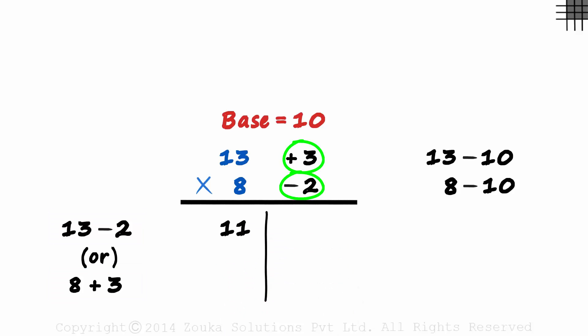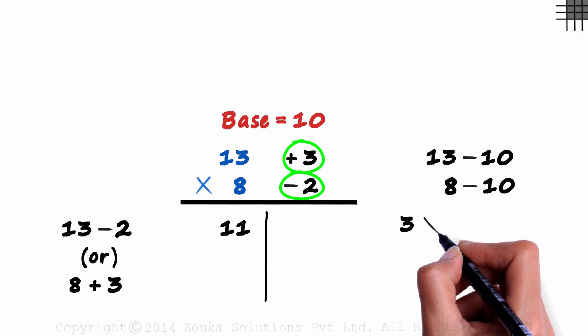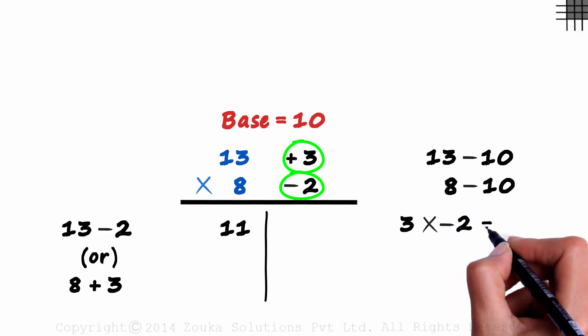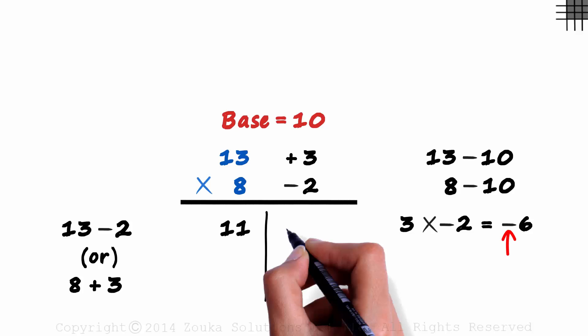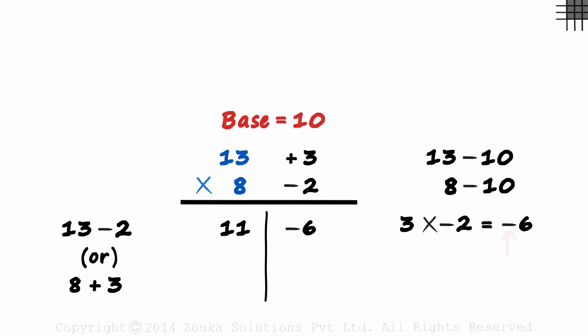What about the product of the deviations? It will equal 3 times minus 2 and that is minus 6. Now it gets tricky. We have a minus sign here. So let's write a minus 6 here. Can this be the answer? The number doesn't even make sense. 11 and minus 6?